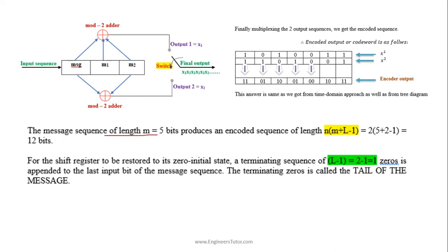The message sequence of length M = 5 bits produces an encoded output of length N × (M + L − 1), where N is the number of encoded outputs and L is the constraint length. In this case N = 2, giving 12 bits. For the shift register to be restored to its initial zero state after processing the input sequence, we must process dummy zeros. A terminating sequence of L−1 (in this case 2−1 = 1) zeros is appended to the last input bit of the message sequence. This terminating sequence of zeros is called the tail of the message.